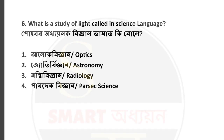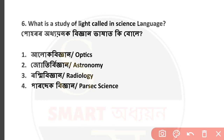Question number 6: What is the study of light called in science language? If you study about light or optics, what would it be called in science? The answer is optics — monotraki or the study of light is called Aluk Biggan, meaning optics. Option number 1 is correct.